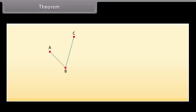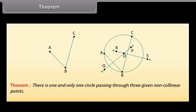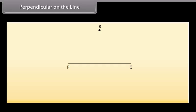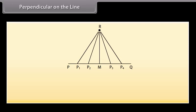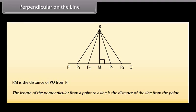Theorem: there is one and only one circle passing through three given non-collinear points. Regarding perpendicular distance — if we take a line PQ and a point R outside it, there are infinite points on the line, say P1, P2, M, P3, and P4. Joining these points to R, we find that RM is perpendicular to PQ. Then RM is the distance of PQ from R, or we can say that the length of the perpendicular from a point to a line is the distance of the line from the point.